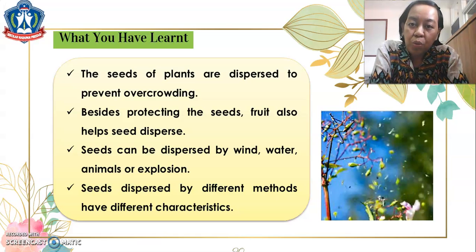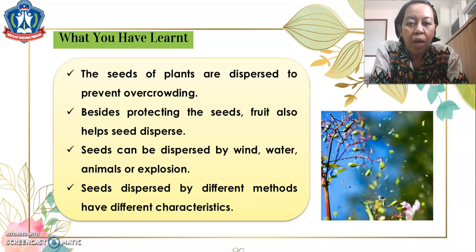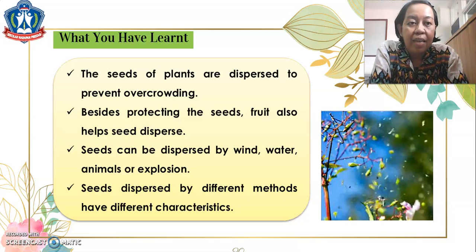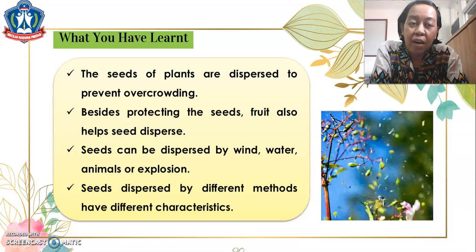So for Lesson D, children, we have learned that seeds of plants are dispersed to prevent overcrowding. Seeds can be dispersed by wind, water, animals, or explosion, and seeds dispersed by different methods have different characteristics. That ends our lesson for today. Thanks for watching — be ready and on time for the Zoom meeting, where we will discuss more about seed dispersal. Take care, P5 students, and see you in our next video. Bye bye and God bless everyone!